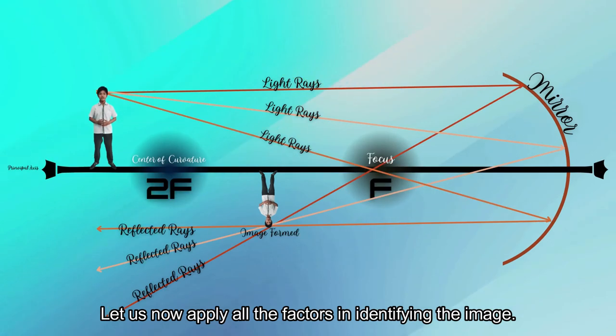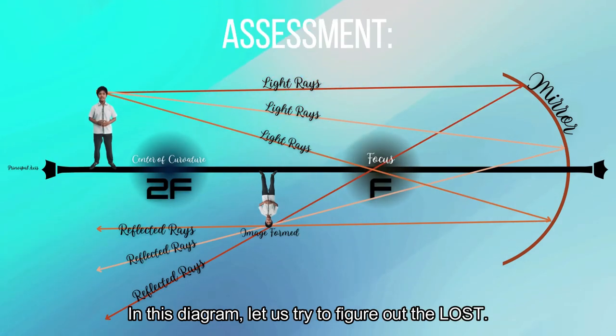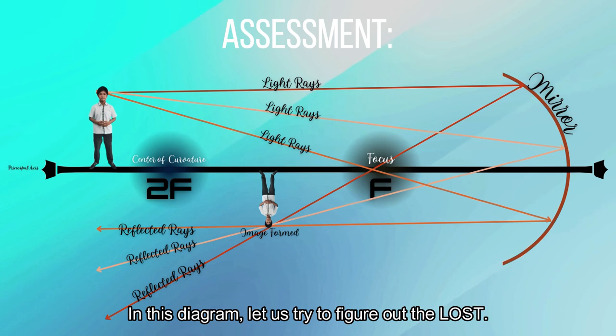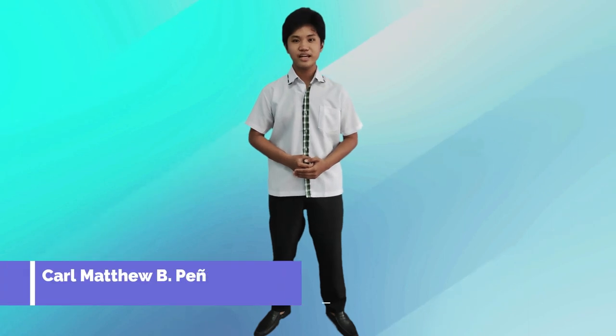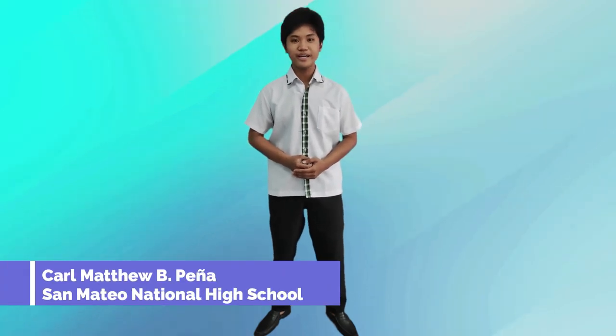Let us now apply all the factors in identifying the image. In this diagram, let us try to figure out the LOSS. I hope you understand everything about the ray diagram in concave mirrors. See you in the next videos. This is Carl Matthew Vipena of San Mateo National High School signing off.